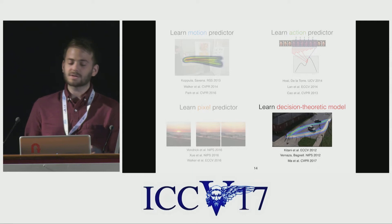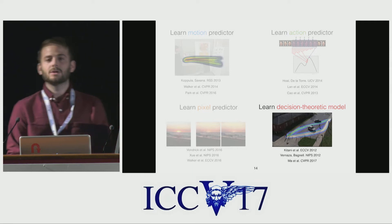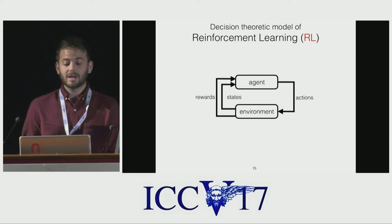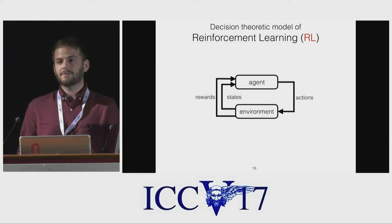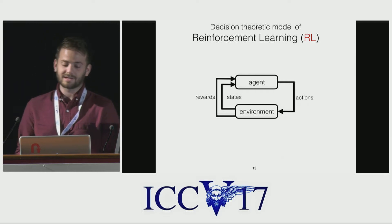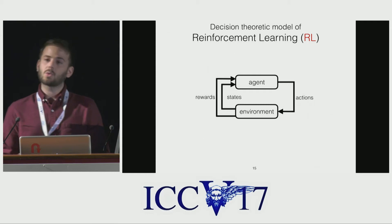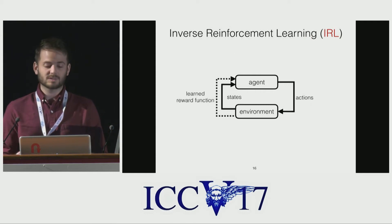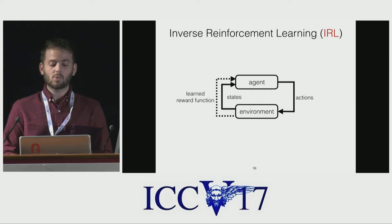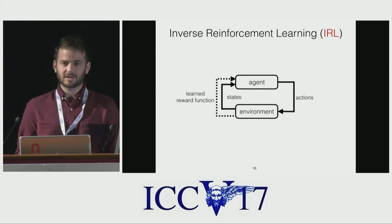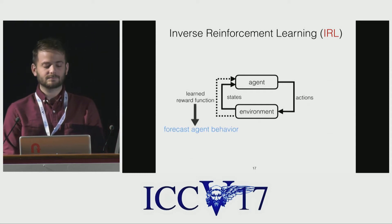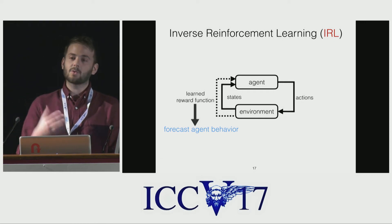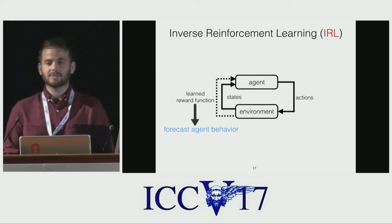Decision-theoretic models are fundamental to reinforcement learning. In reinforcement learning, an agent receives reward for every action taken — in a sense, the rewards are given. Whereas in inverse reinforcement learning, rewards are learned from demonstrated behavior. The learned reward function can be used to forecast the future actions taken by the agent.